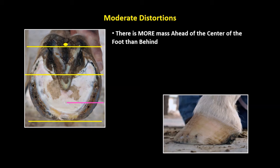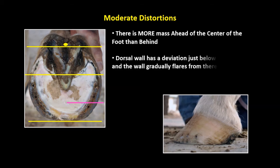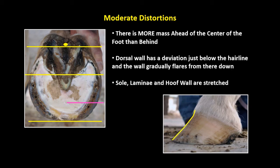Moderate distortions: There is more mass ahead of the center of the foot than behind. The dorsal wall has a deviation just below the hairline and the wall gradually flares from there down. Sole, lamina, and hoof wall are stretched.